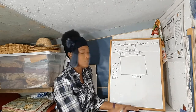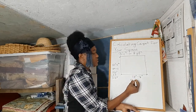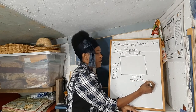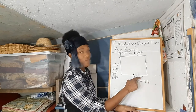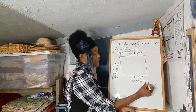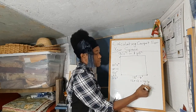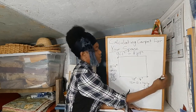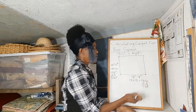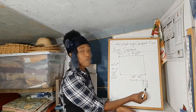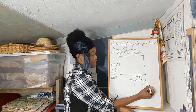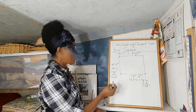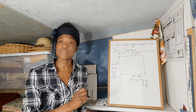Now let's convert the width: 12 feet 4 inches. There are 12 inches in a foot, so 12 times 12 equals 144. We can't forget the 4 inches, so we add 4. That's 148 inches. So our width is 148 inches and our length is 126 inches.